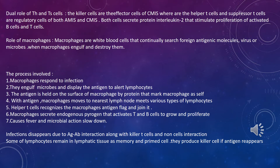Macrophages secrete endogenous pyrogen, which causes T cells and B cells to grow and proliferate — this is why you get fever, and microbial action slows down. Fever is a sign that your antibodies are working against infection. Some lymphocytes remain in lymphatic tissue as memory and primed cells, ready to produce killer cells if the antigen reappears.